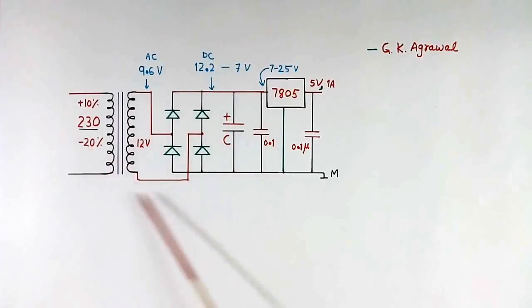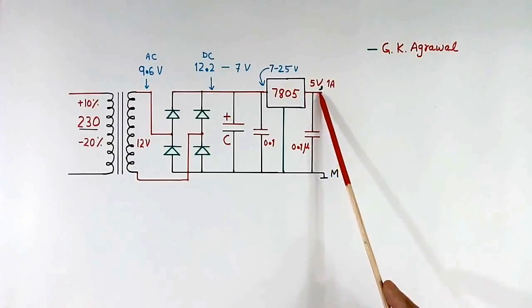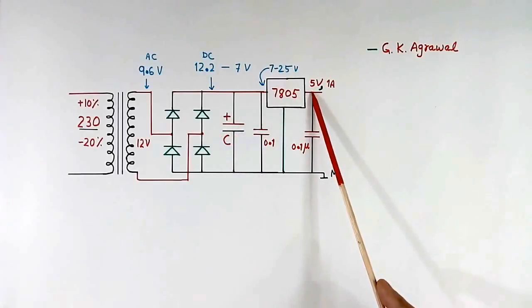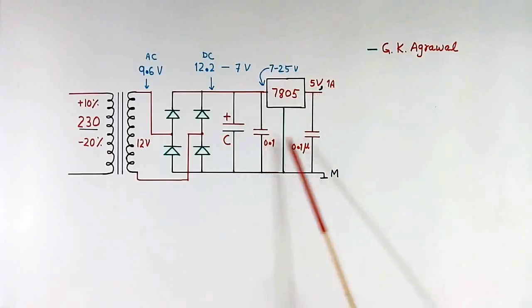This is the circuit. This is transformer. These are 4 rectifier diodes. This is electrolytic capacitor. This is 5 volt regulator 7805. Output we will get 5 volt. We will calculate the value of this capacitor for 5 volt and 1 ampere load. These two are 0.1 micro farad polyester capacitor.